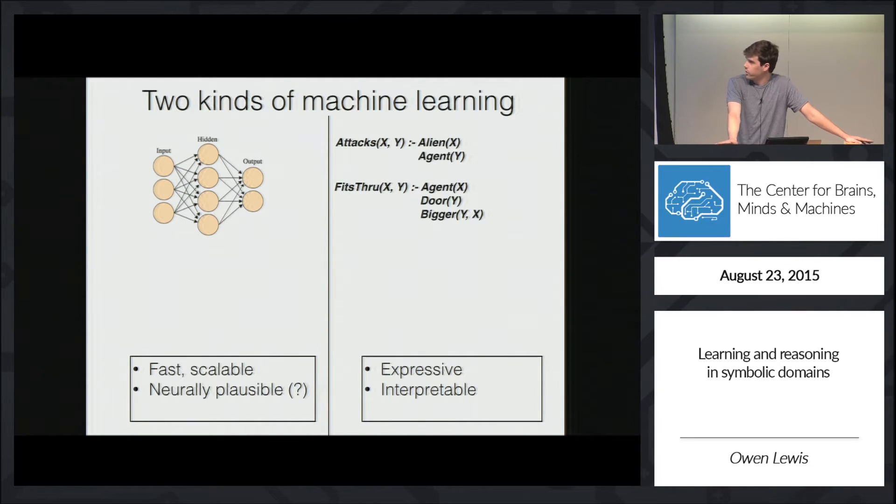But when we actually try to design or find a representation like this, we run up against the flip side of the coin, which is that discovering symbolic representations is very slow, whereas learning a deep neural network is very fast. So in particular, the problem is that with the network you have a gradient which can guide your search for a good model, whereas in the symbolic case you kind of have to stumble around until you hit something acceptable.